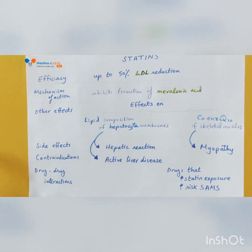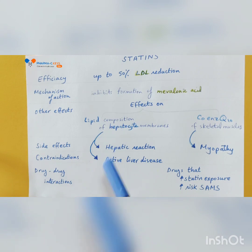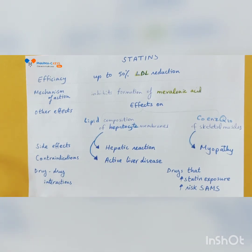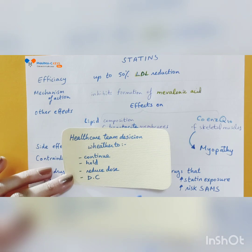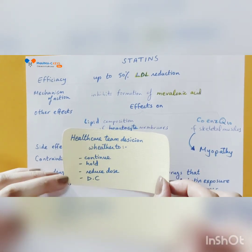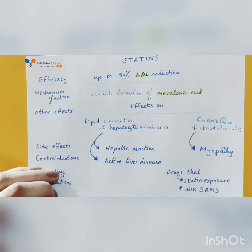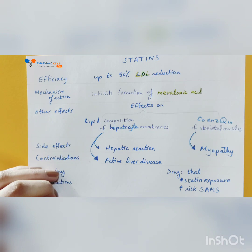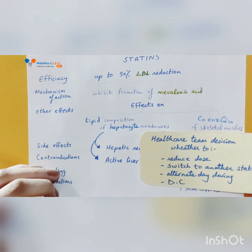Regarding hepatic reaction, in cases of liver function test elevation three times above the upper normal limit, you will need to counsel the patient to refer to the physician so that he can decide whether any corrective actions are needed. For myopathy, in cases of intolerant muscle symptoms with creatine kinase elevations, there is currently limited evidence about the benefit from coenzyme Q10 supplementation. Therefore, you will need to counsel your patient to refer to his physician to decide on the appropriate action.